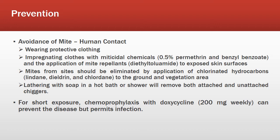Regarding preventive measures, the main prevention is avoidance of mite-human contact. This can be done by wearing protective clothing and impregnating clothes with miticidal chemicals like 0.5% permethrin and benzyl benzoate, and applying mite repellents like diethyltoluamide (DEET) to exposed skin surfaces. Mites from sites should be eliminated by applying chlorinated hydrocarbons like lindane, dieldrin, and chlordane to the ground and vegetation area. Lathering with soap in a hot bath or shower will remove both attached and unattached chiggers. For short exposure, chemoprophylaxis with doxycycline 200 mg weekly can prevent the disease but permits the infection.